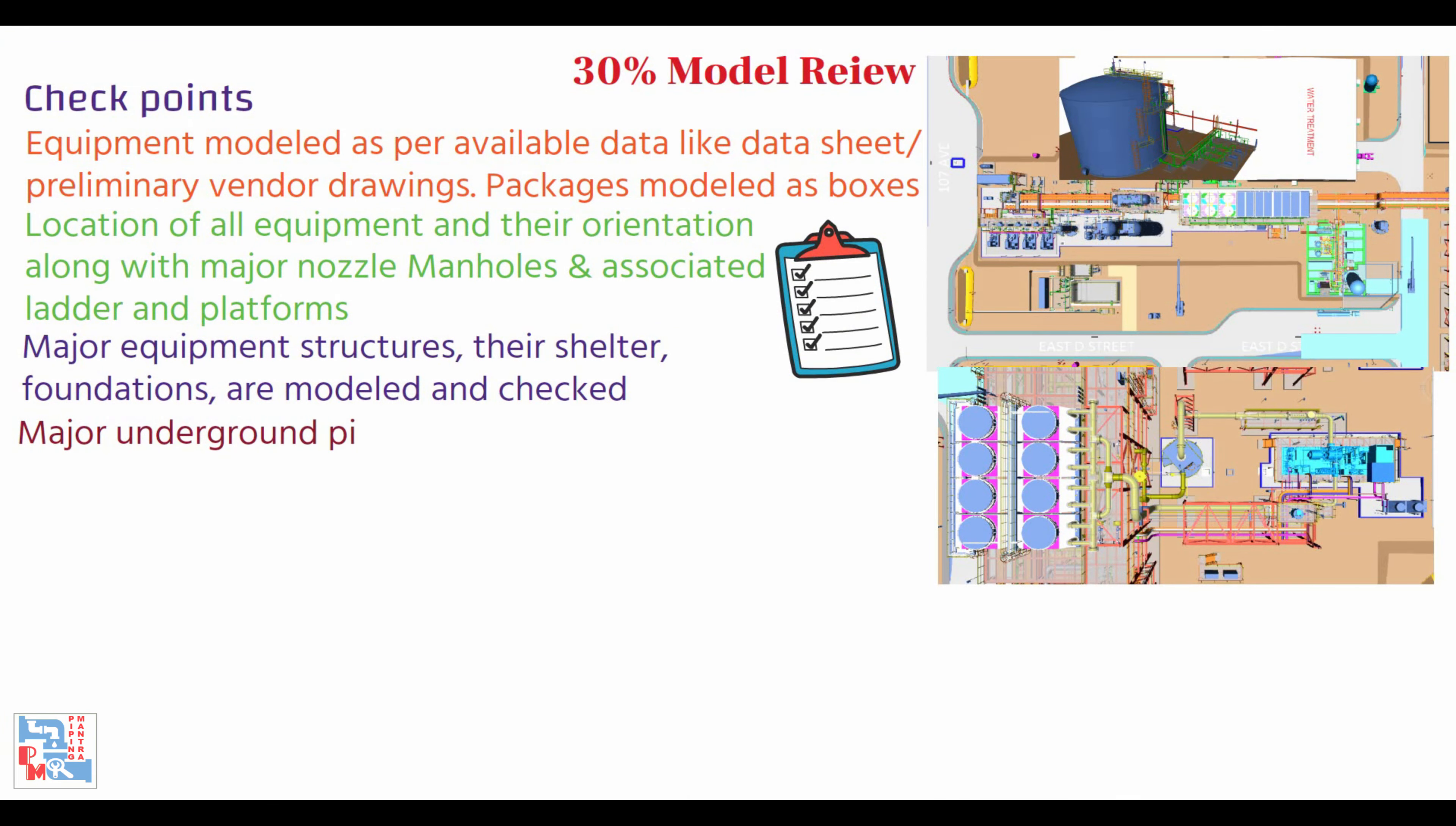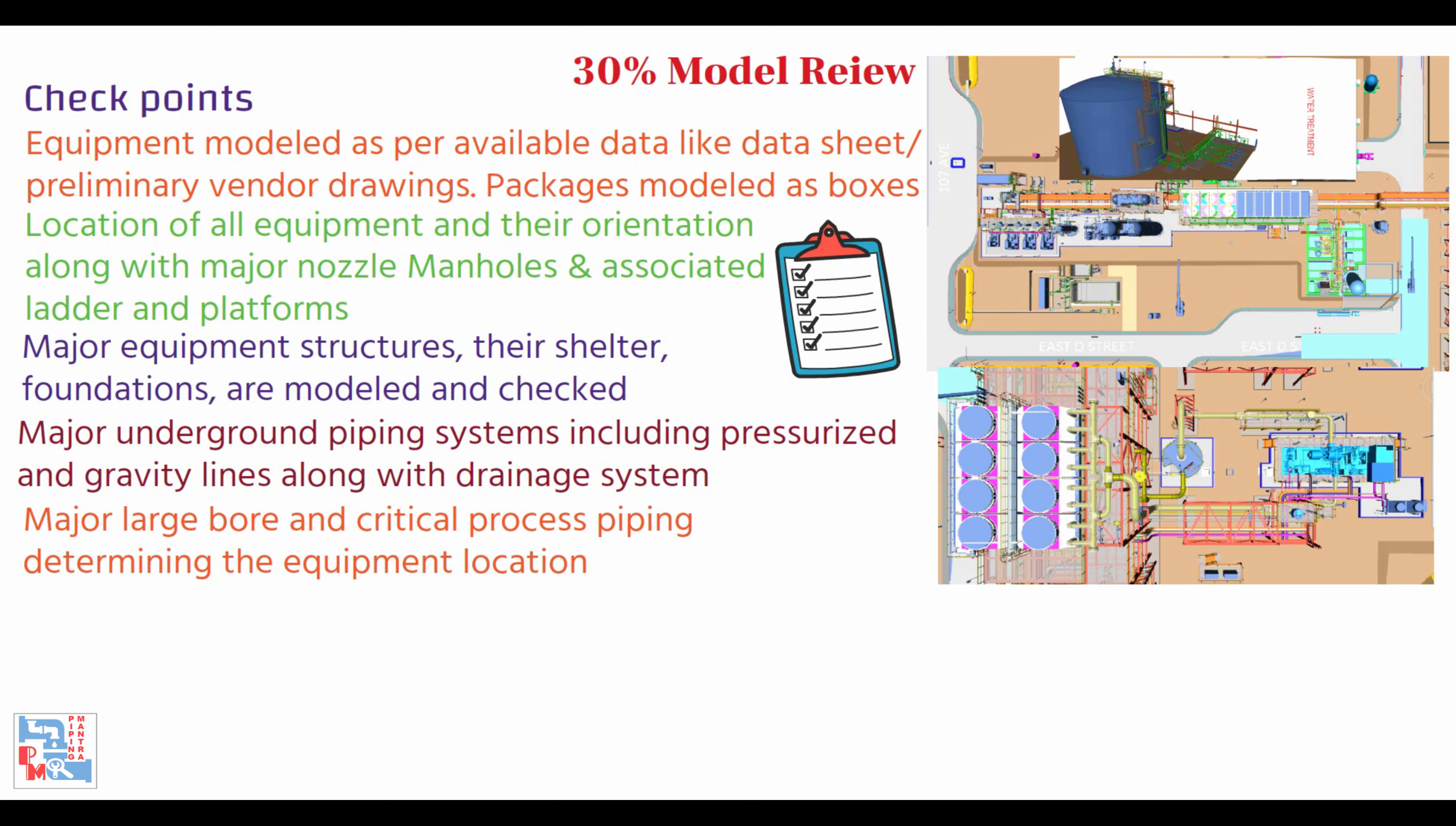Major underground piping systems including pressurized and gravity lines along with the drainage system are modeled and checked. Major large bore and critical process piping determining the equipment locations are modeled and checked. All critical piping requiring slopes and no pockets as per process requirements are checked.